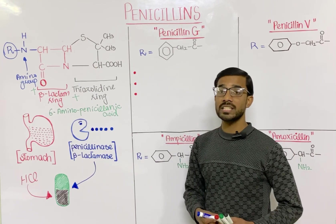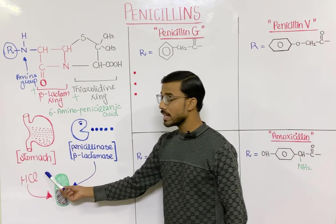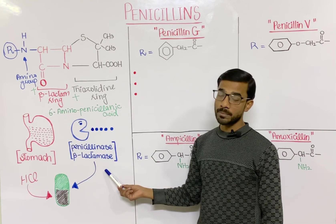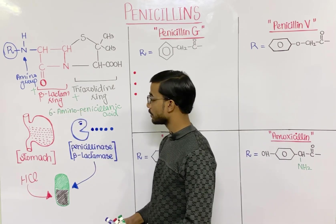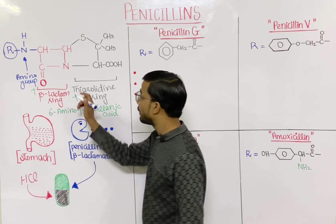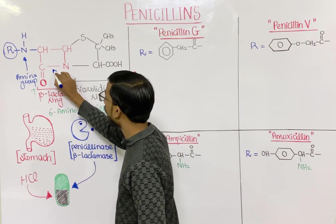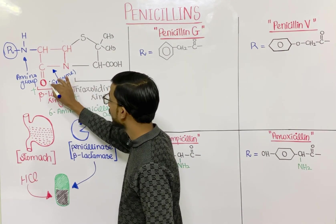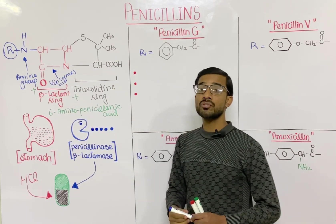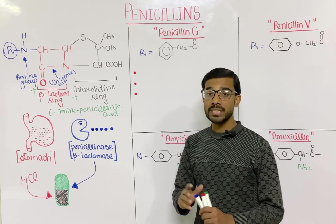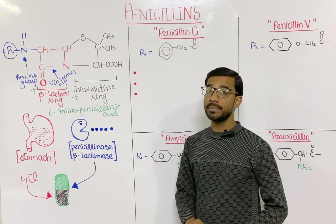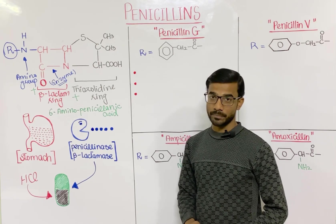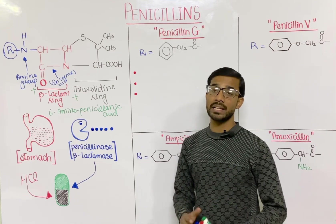So penicillin is susceptible to two components: the acid produced from the stomach and the enzyme produced by bacteria. That enzyme specifically breaks the carbon-nitrogen bond of the beta-lactam ring. Penicillinase breaks that bond and destroys the beta-lactam ring, which is very important for antimicrobial activity. When there is no beta-lactam ring, there is no antimicrobial activity — that is the defense mechanism of the bacteria.